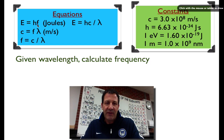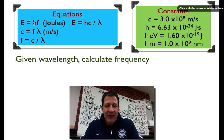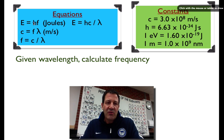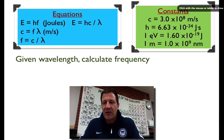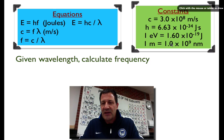We have two equations for energy: one if we know the frequency, and one if we know the wavelength — the other values are constants. In this video, I'm going to take the long way around, using just the first two equations. Here are our conversion factors: one electron volt is 1.6 times 10 to the minus 19 joules, and 1 meter equals 1 times 10 to the 9 nanometers.